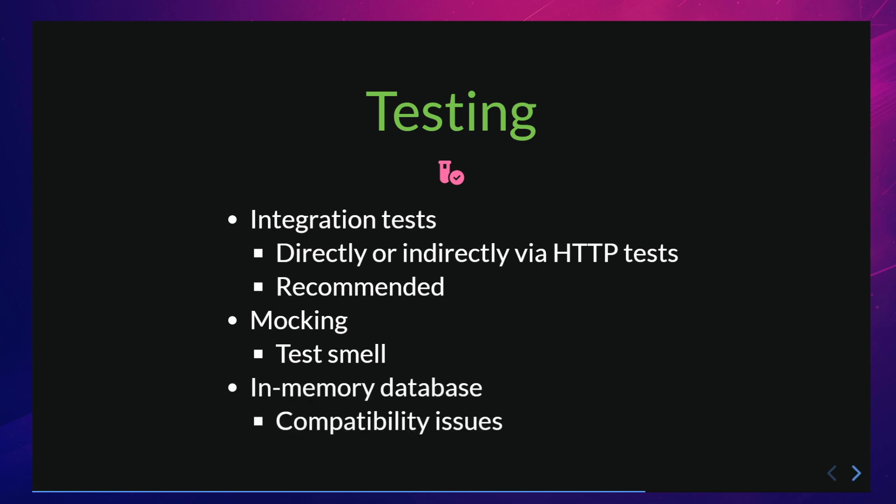A third way to test a repository is to use an in-memory database. This involves setting up an in-memory database to check that the correct queries are being executed and the correct data is being returned. Note that using an in-memory database such as SQLite can lead to compatibility issues with your real database server such as MySQL and PostgreSQL, so the test results will never be as good as if you tested with the same database system.